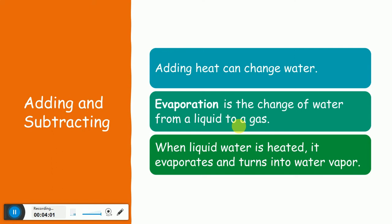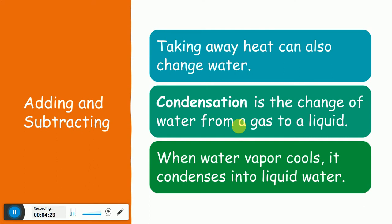Now think about the opposite of evaporation. If we want to change the water vapor into water again — a gas to a liquid — what should we do? Excellent, we have to take away heat. When we take away heat from gas, it's going to turn into liquid. This process is called condensation. Condensation is the change of water from a gas to a liquid. When water vapor cools, it condenses into liquid water.